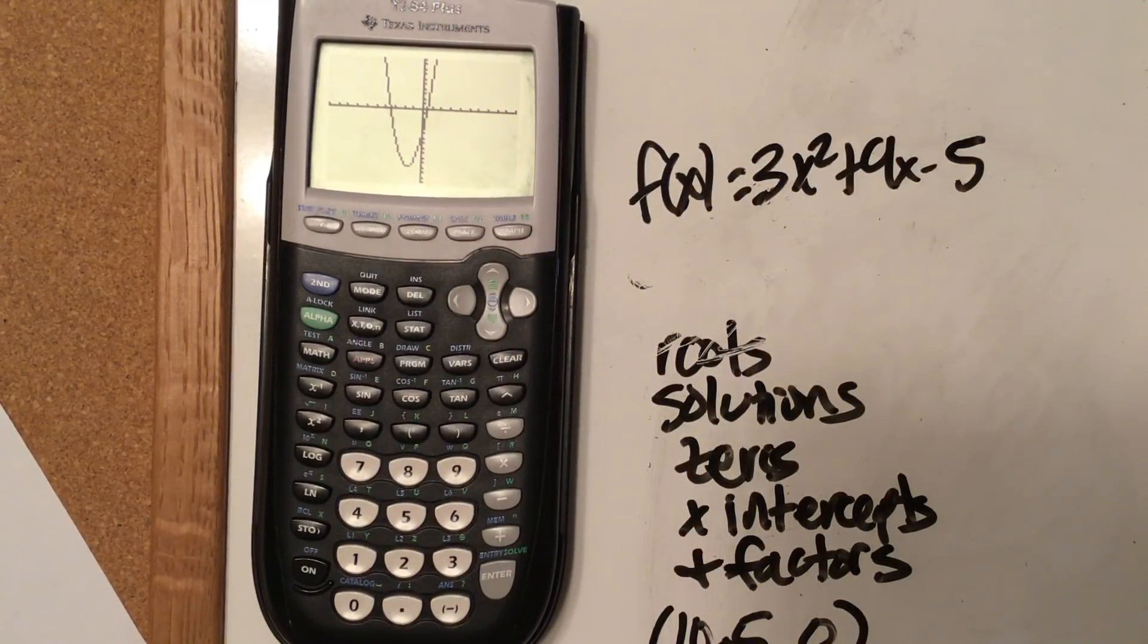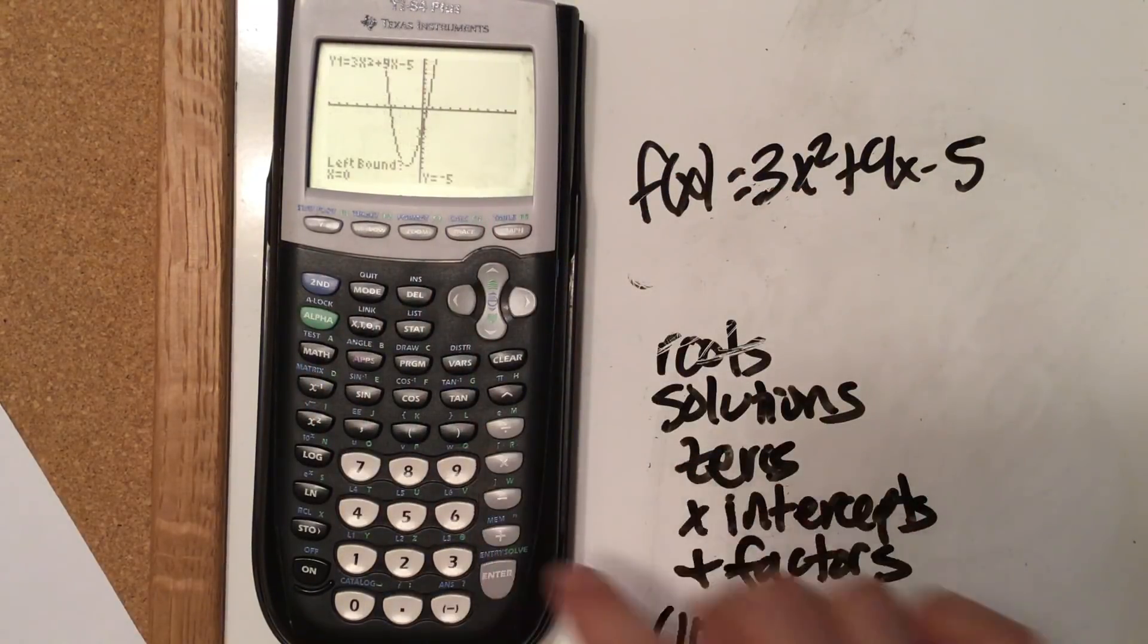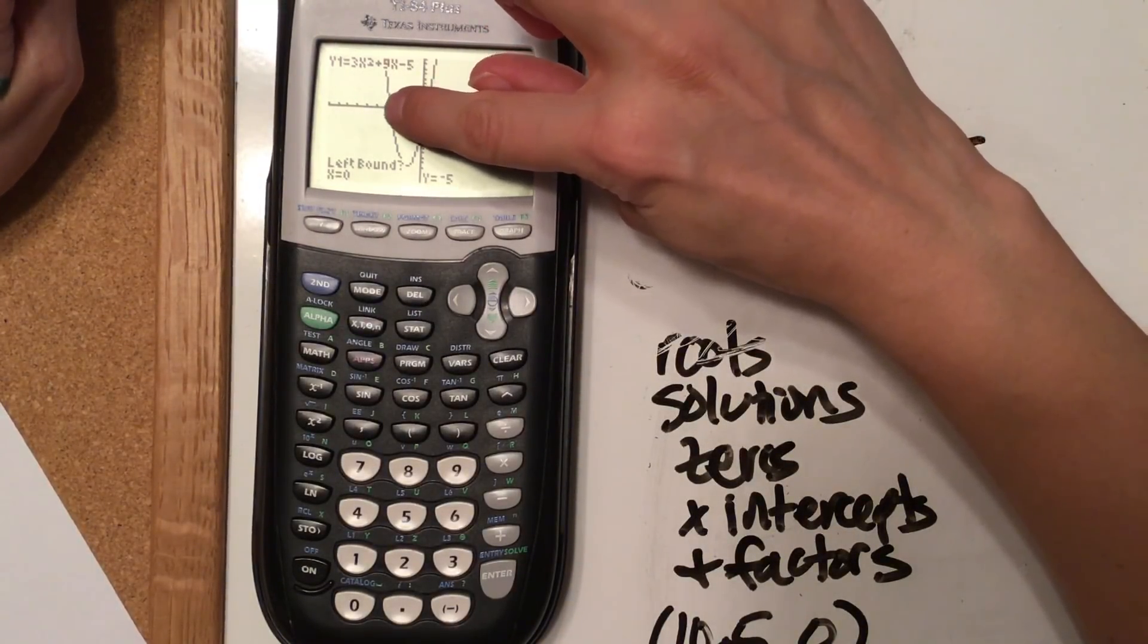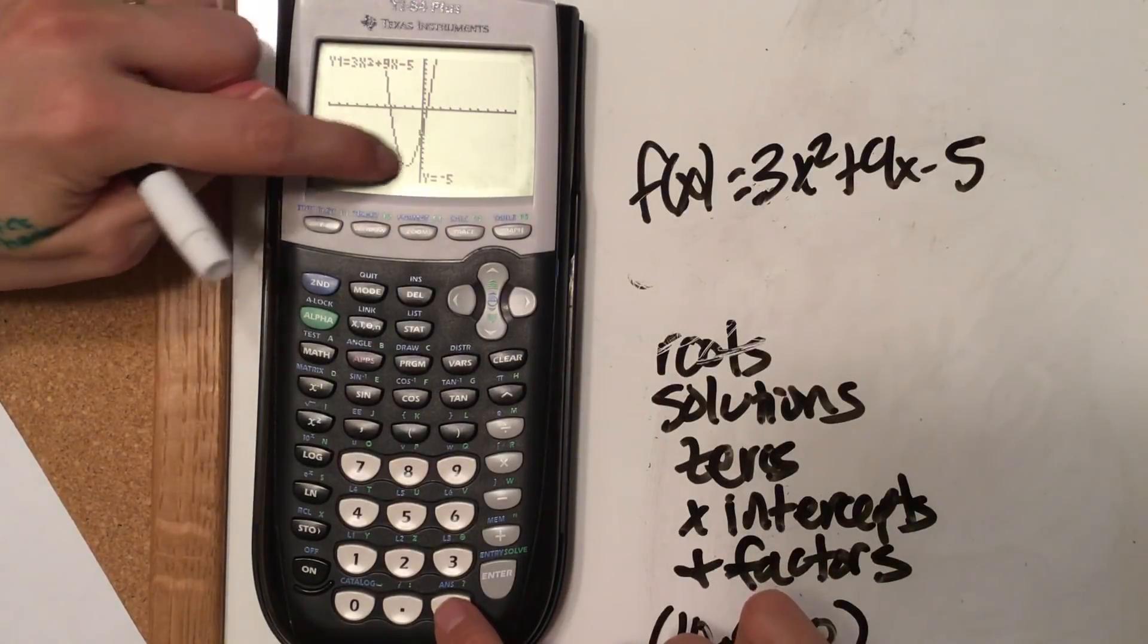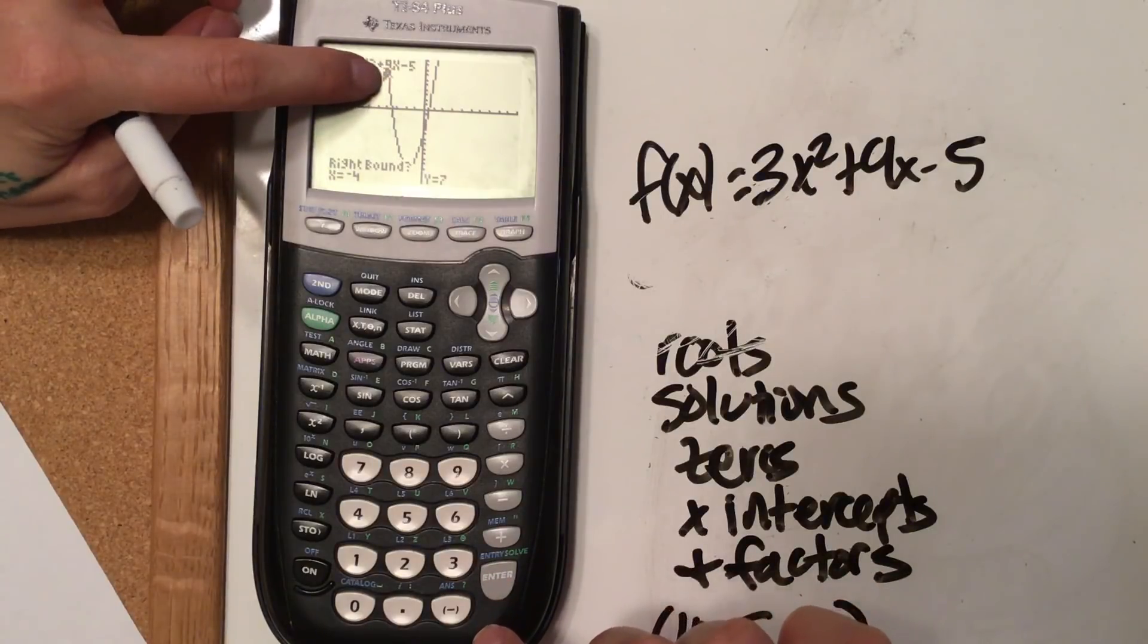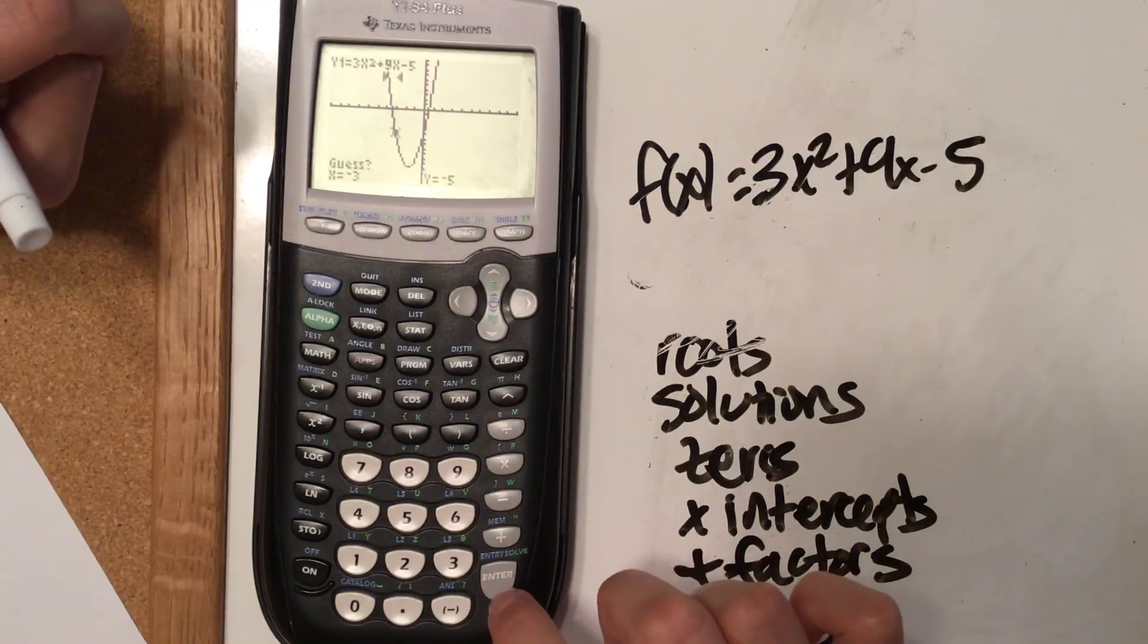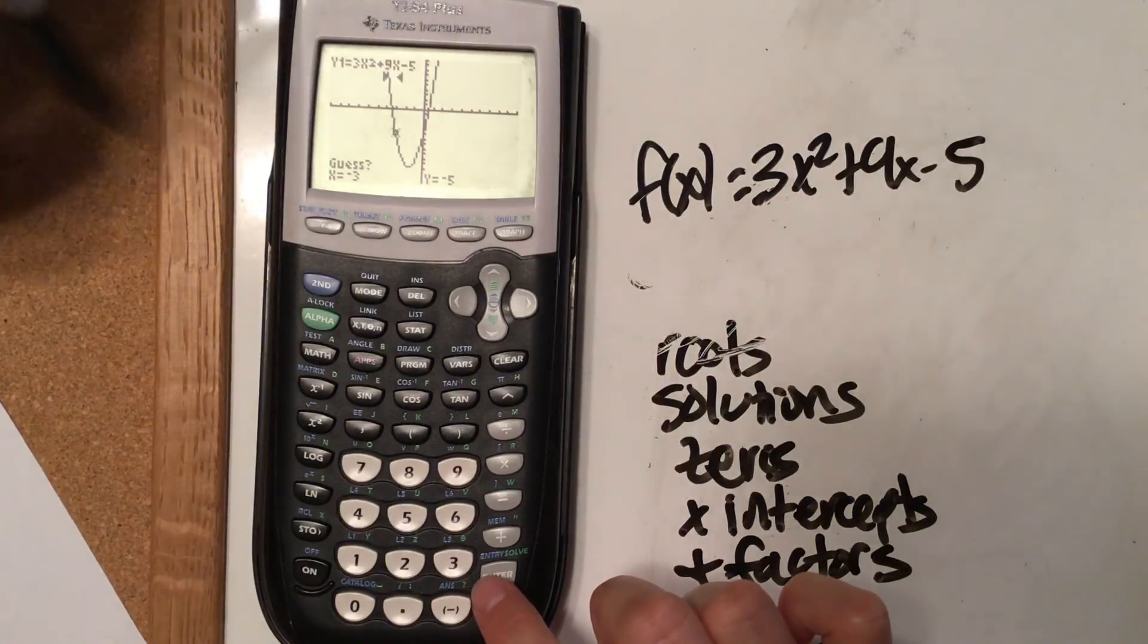So here we have two x-intercepts, so we want to find both of the x-intercepts. So here we can do zero. Now, you can move your cursor to the left, but I can also tell here, I know that this is negative 1, negative 2, negative 3, negative 4. So I know that negative 4 is to the left of it. So rather than move my cursor, I can just hit negative 4 and then hit enter. And notice it puts an arrow where negative 4 is. And then I know that negative 3 is to the right of it, so I can hit negative 3 and then hit enter. Notice that between the two arrows is where the x-intercept happens.